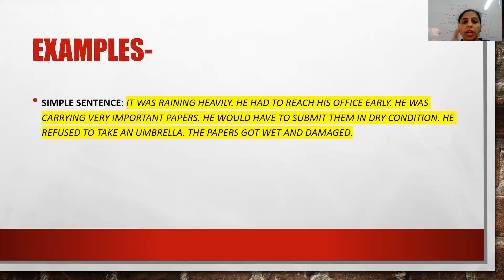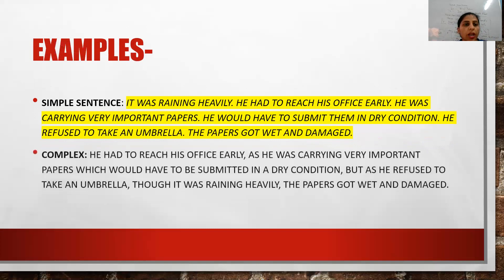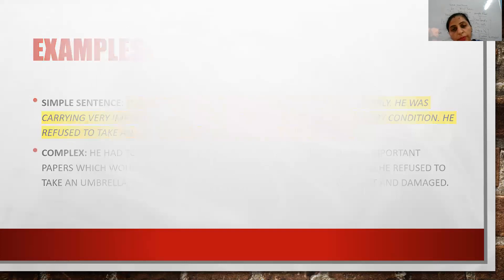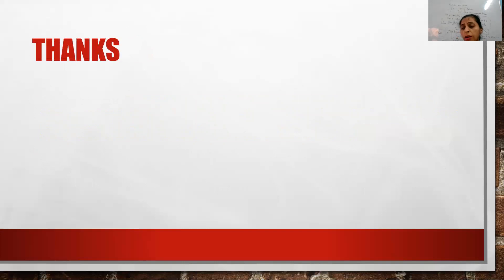More examples: six simple sentences — 'It was raining heavily. He had to reach his office early. He was carrying very important papers. He would have to submit them in dry condition. He refused to take an umbrella. The papers got wet and damaged.' — can become: 'He had to reach his office early as he was carrying very important papers which had to be submitted in dry condition. But as he refused to take an umbrella, though it was raining heavily, the papers got wet and damaged.' In this way I changed everything into the complex form. Try not to repeat connectors and cohesive devices, as that will be very difficult.